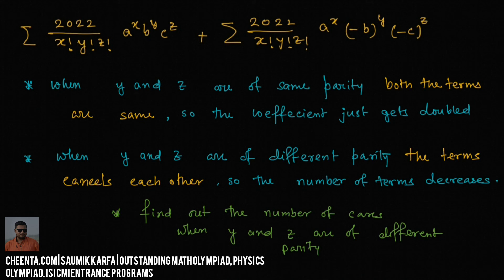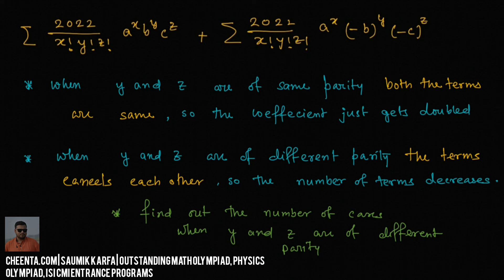So we need to find how many cases have Y and Z of different parity, and subtract that number from the total C(2024, 2) terms in the expansion of (A + B + C)^2022. That will give us our required answer. For the full solution, visit the link given below.